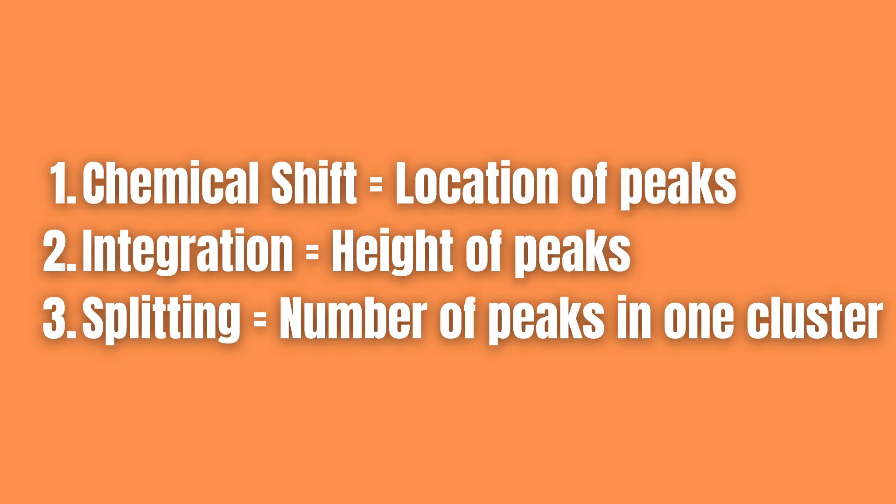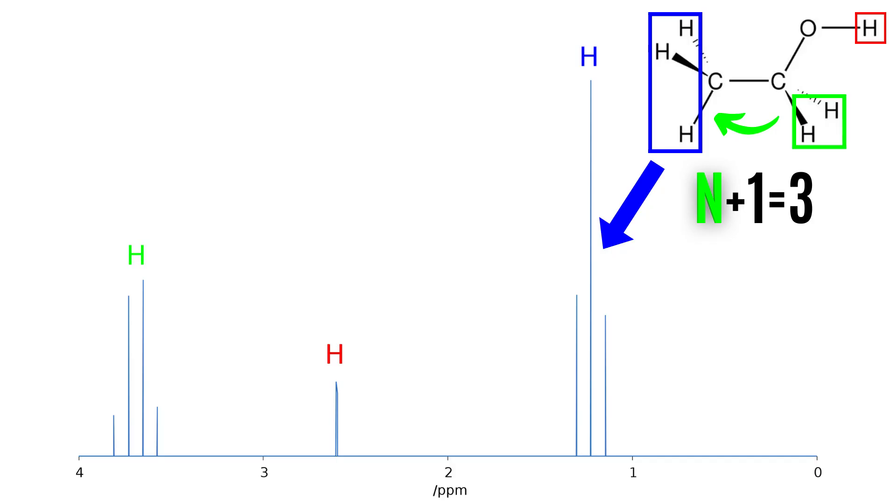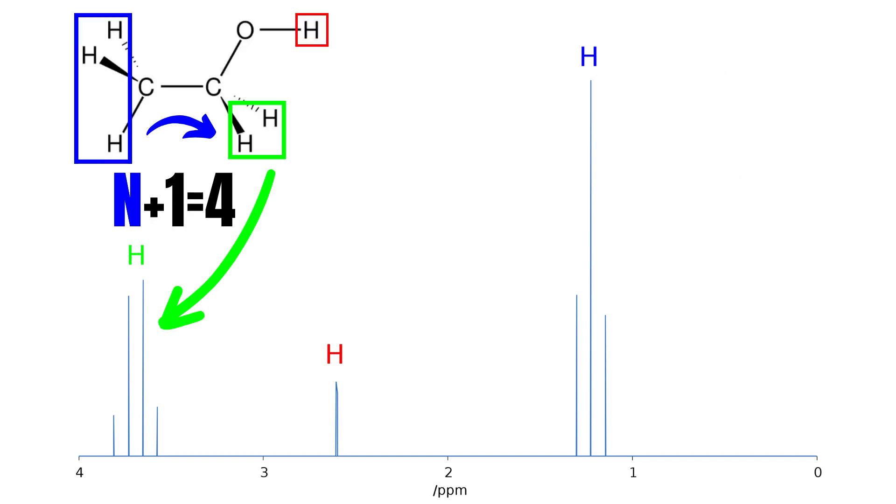Third is splitting which has to do with the number of peaks in one cluster. This is dependent on the number of neighboring hydrogens, in this case meaning the hydrogens attached to the closest carbon atom. In addition you have to follow the n plus one rule, meaning that if there are three neighboring hydrogens there will be three plus one or four peaks for that hydrogen group.